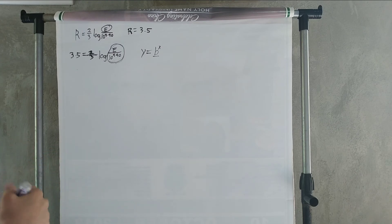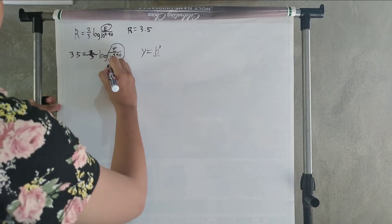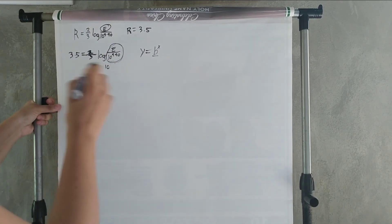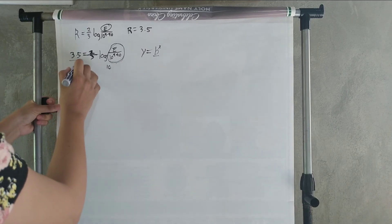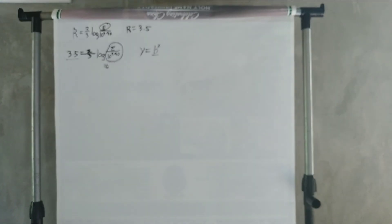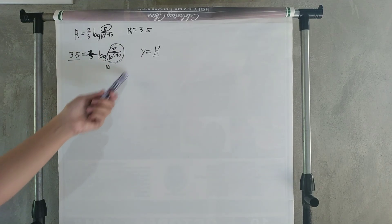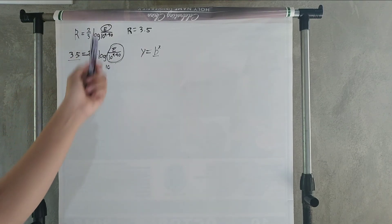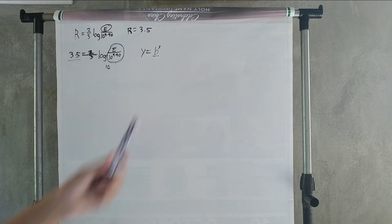We're going to use this as our y, 10 as our base since the base of the Richter scale is 10, and 3.5 as our x. Since we're looking for E, we have to transform this whole equation into an exponential function. But how?